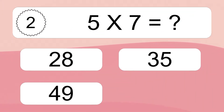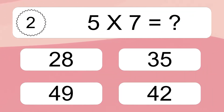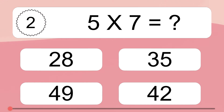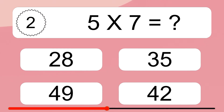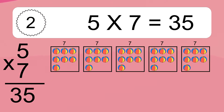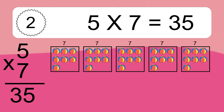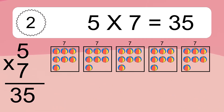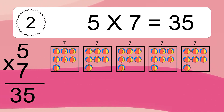5 times 7 equals what? 5 times 7 equals 35. We have 5 boxes, and each box has 7 colorful balls inside. If you count all the balls in all the boxes together, you will have 5 times 7 balls. This equals 35 balls.